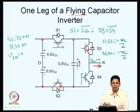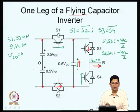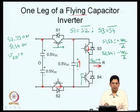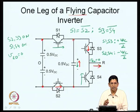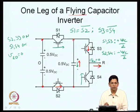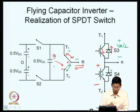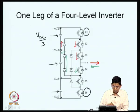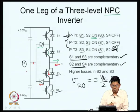In the flying capacitor inverter, you have a unique way to connect the pole to the positive or negative DC bus, but multiple redundant ways to realize the intermediate zero potential. These redundant switching states are used to maintain the flying capacitor voltage at 0.5V_DC through appropriate modulation and control. The challenge is both pre-charging the capacitor to this voltage level and then maintaining it during operation through proper modulation.